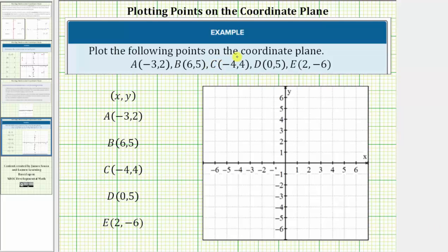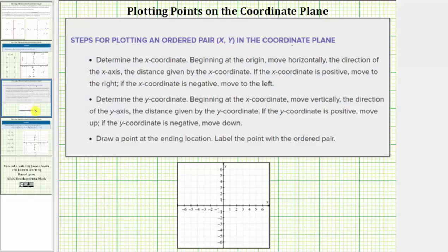We want to plot the following points on the coordinate plane. Let's begin with a review. The location of a point is always given by an ordered pair x comma y. So the first step is to determine the x coordinate, which is the first value of the ordered pair. Then beginning at the origin, move horizontally the direction of the x axis, the distance given by the x coordinate.